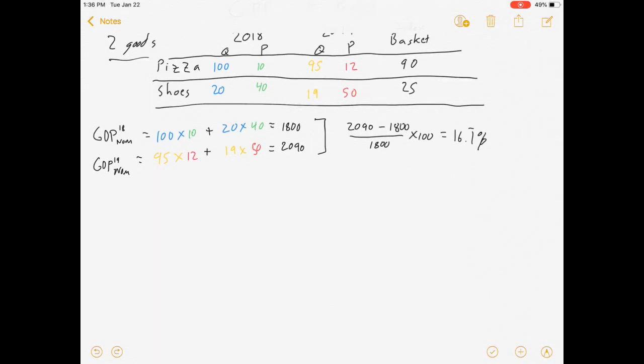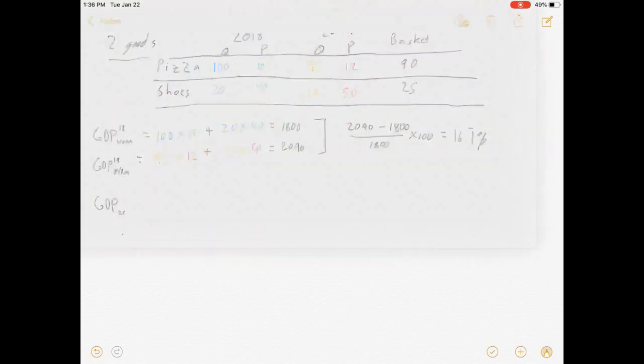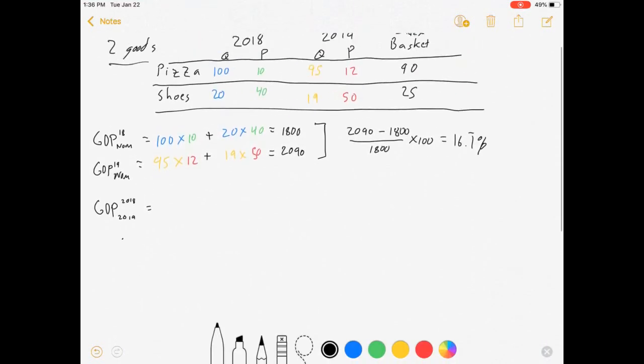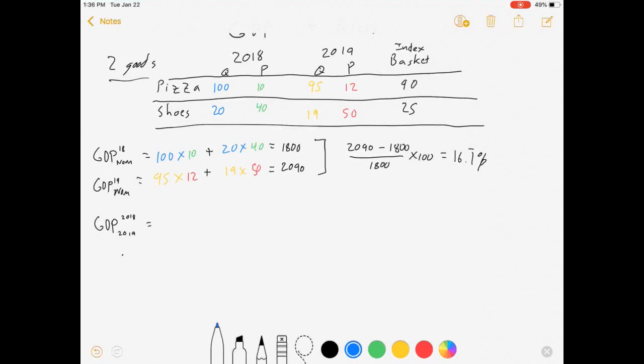I'm going to calculate how production has changed and we'll calculate how prices have changed. So next we'll go to real GDP, which for this we're going to look at how production has changed. Let's take 2019 as our base year in 2018.